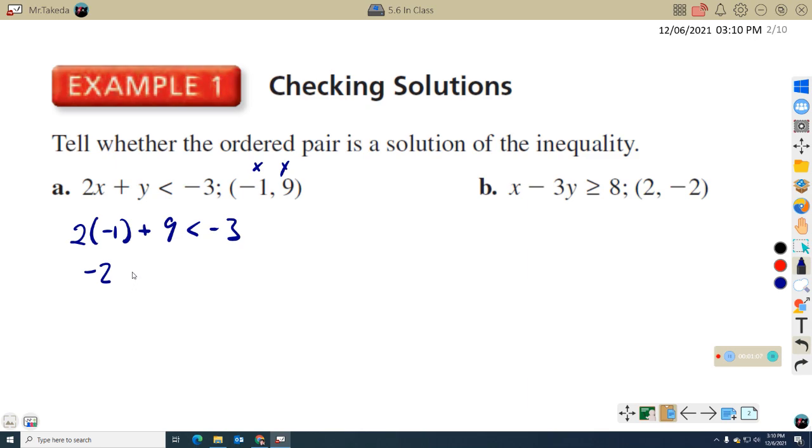Negative 1 times 2 is negative 2. Negative 2 plus 9 is 7. And 7 is not less than negative 3. So this is a false statement. So that tells me that negative 1, 9 is not a solution.